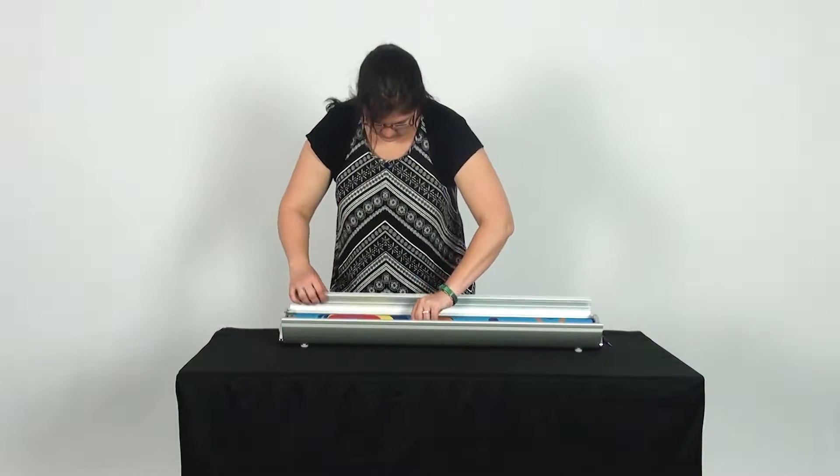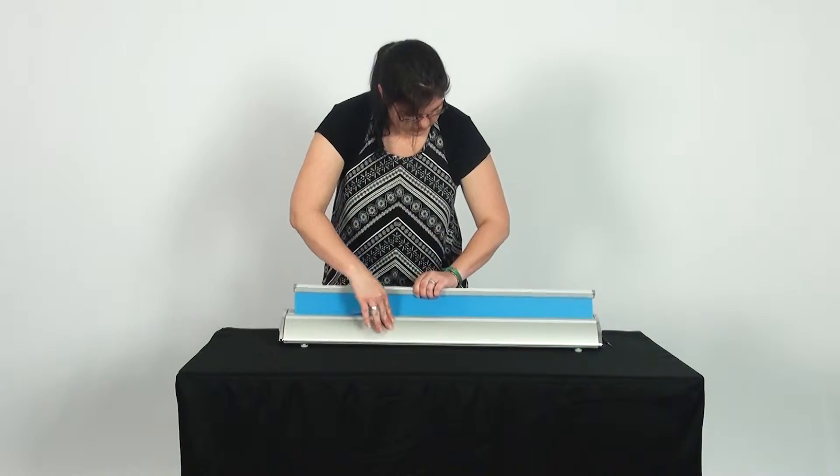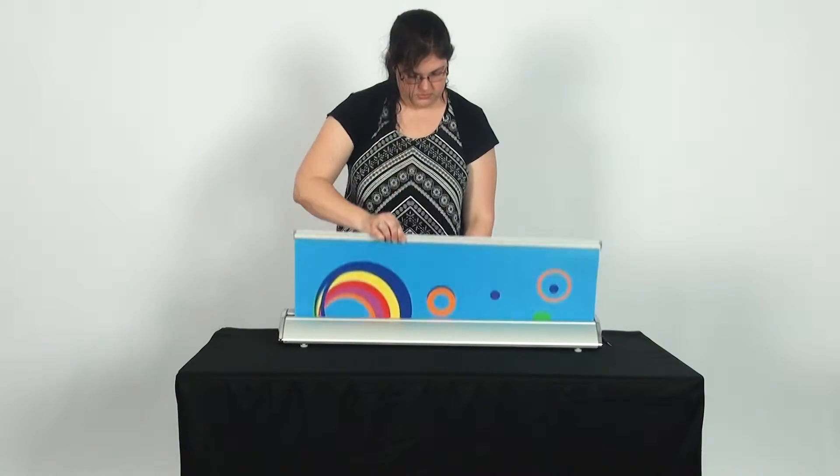Now pull your print out six inches and close both the back panel and the front panel. Your roll-up is now re-tensioned.